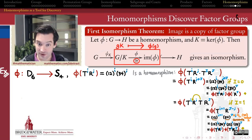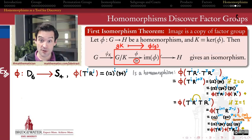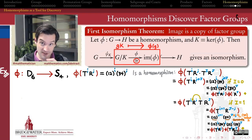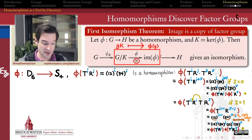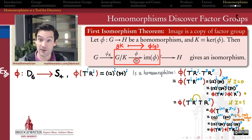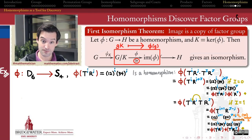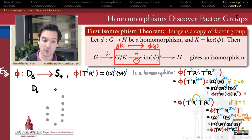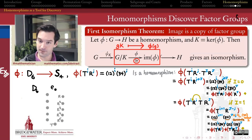We put in a lot of effort to verify that this function actually respects the structure in these two groups. That's important because if it doesn't, it can lead to all sorts of wrong conclusions. We really need these functions to be homomorphisms to get the abundance of information the first isomorphism theorem is going to give us.